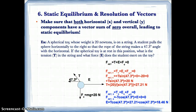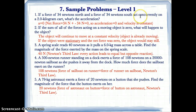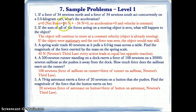Sample problems level one. If a force of 34 newtons north and a force of 34 newtons south act concurrently on a 2.0 kilogram cart, what is the acceleration? The net force is positive 34 plus negative 34 equals zero, because they balance each other — going in opposite directions with equal magnitude. Since net force is zero, acceleration is zero.